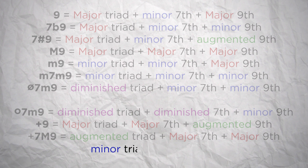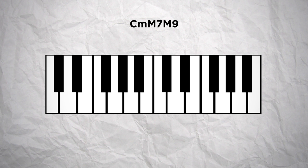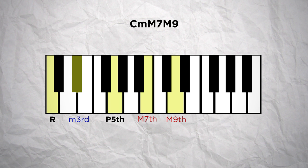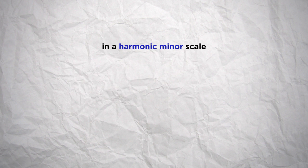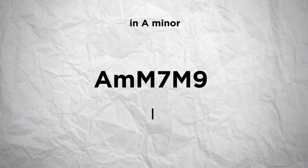And finally you could have a minor triad with a major 7th and a major 9th — so that would be like a minor 9th chord but with a major 7th instead of a minor one. That can be noted as minor major 7th major 9th. So for a C minor major 7th major 9th chord, that would be the root note C, the minor 3rd E flat, the perfect 5th G, the major 7th B and the major 9th D. That's a chord that can be a substitute for the 1st degree in a minor tonality. So in A minor, the A minor chord could be replaced by an A minor major 7th major 9th chord at some point.